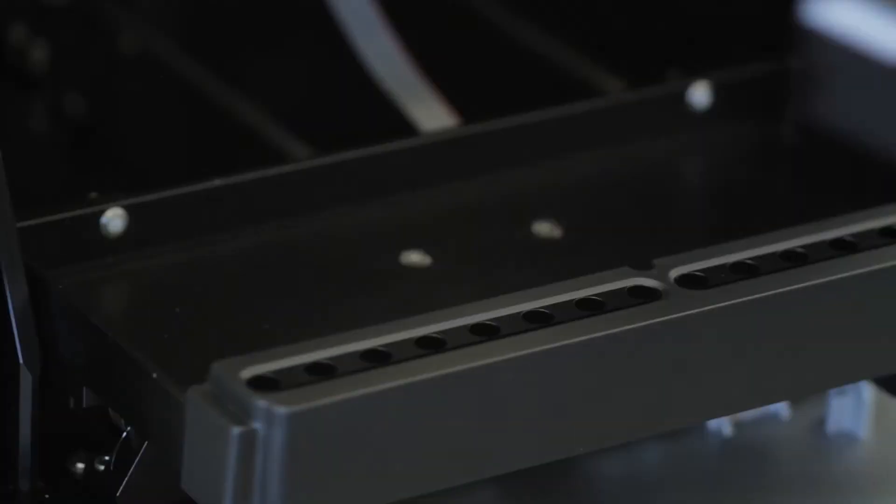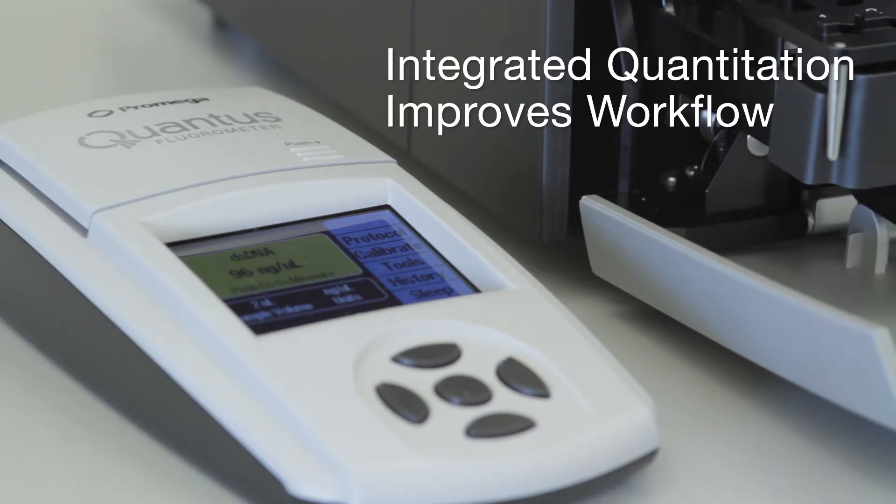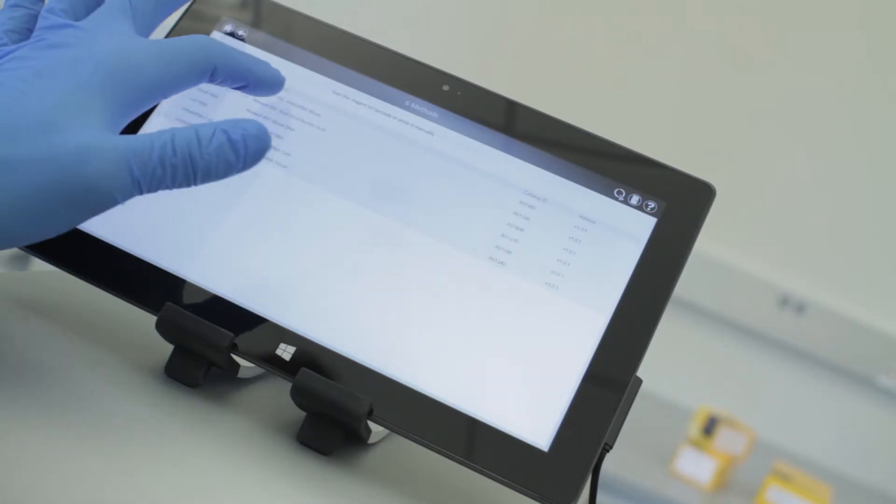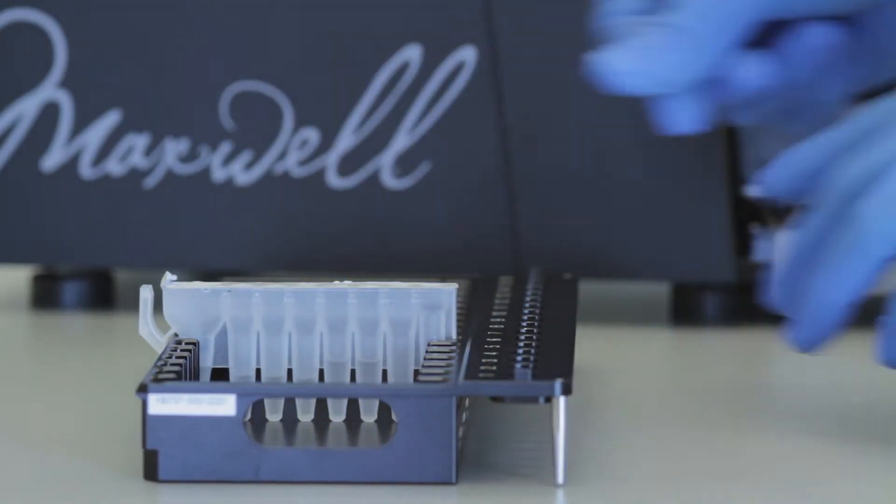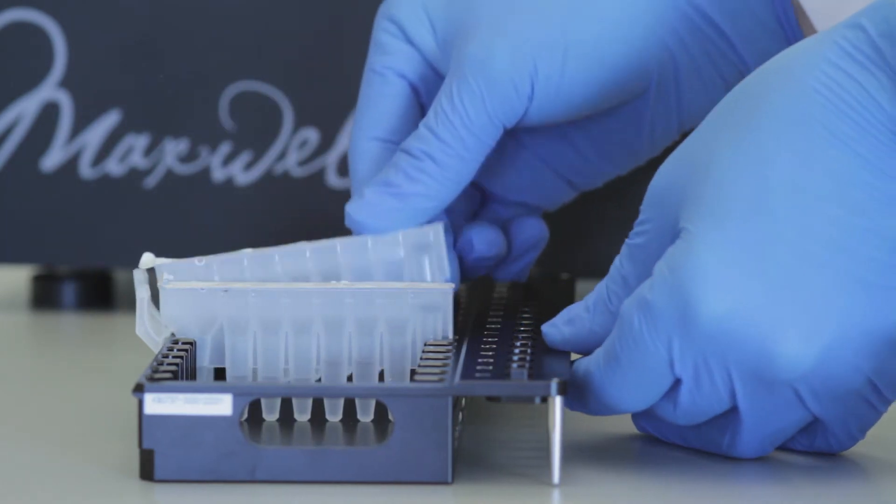Automated purification saves you time, and integrated quantitation means that all of your results are kept together. Pre-programmed methods and pre-filled reagent cartridges get your samples processed quickly and help you get more done.